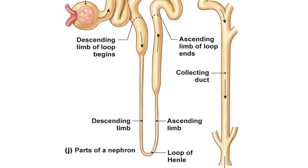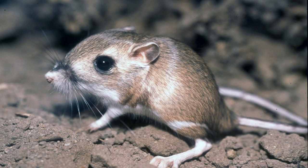The loop of Henle needs to be long enough to allow lots of water to be reabsorbed back into the body. The kangaroo rat has a really long loop of Henle in its kidney, which allows almost every bit of water from its diet to be reabsorbed back into its body - an adaptation to living in desert conditions.